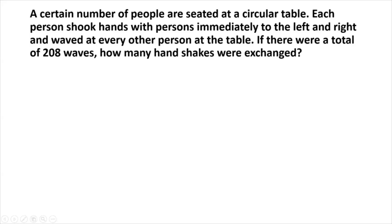A certain number of people are seated at a circular table. Each person shook hands with persons immediately to the left and right, and waved at every other person at the table. If there were a total of 208 waves, how many handshakes were exchanged?